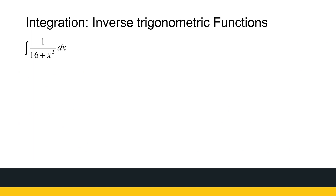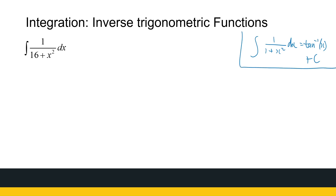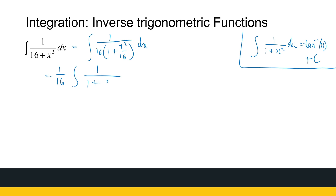Now the second example: the integral of one over 16 plus x squared. This looks similar to the integral of one over one plus x squared dx, which gives arc tan of x. It's not exactly that, but we use the same technique. Taking 16 out as a common factor gives one over 16 times the integral of one over one plus x over four squared dx, since x squared over 16 equals x over four squared.